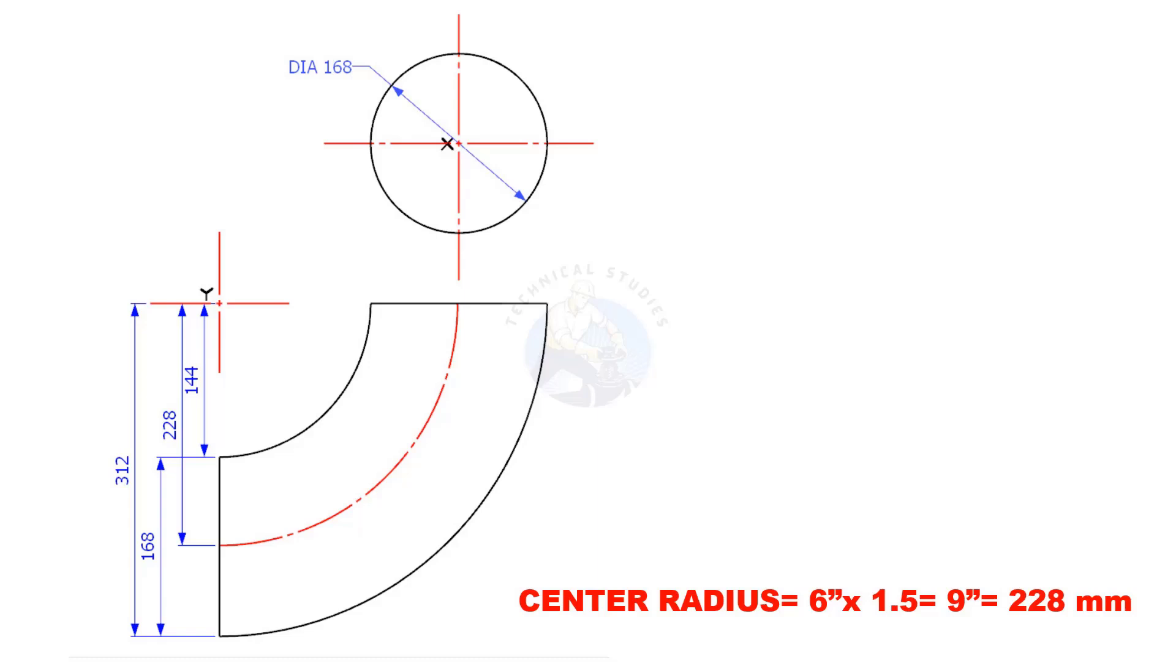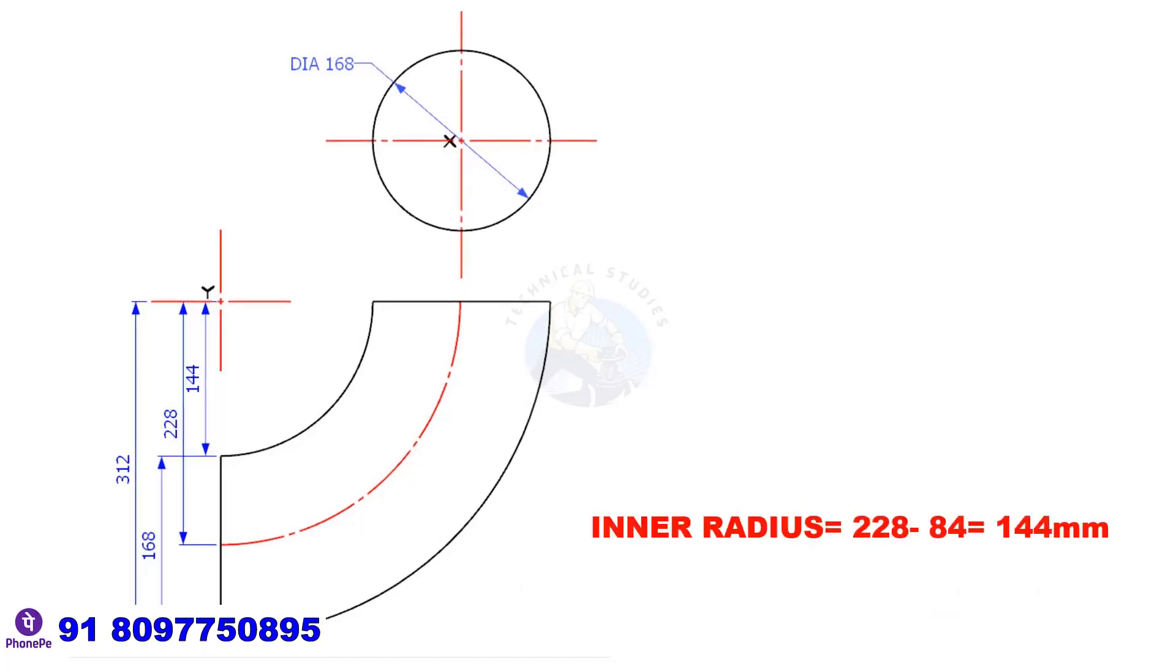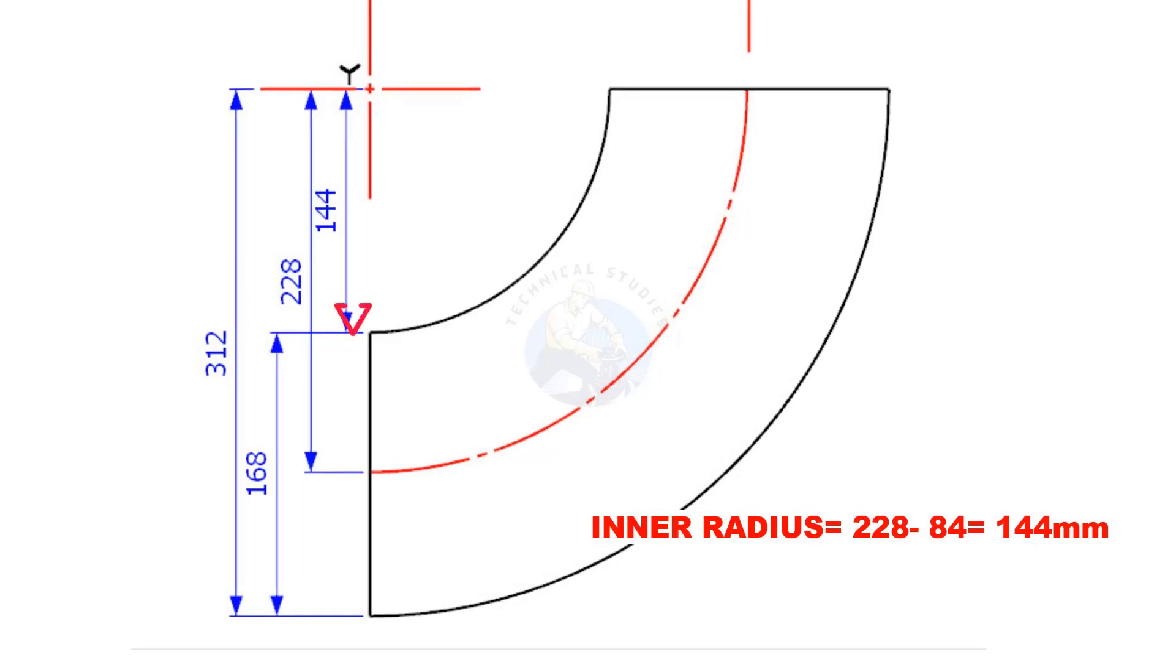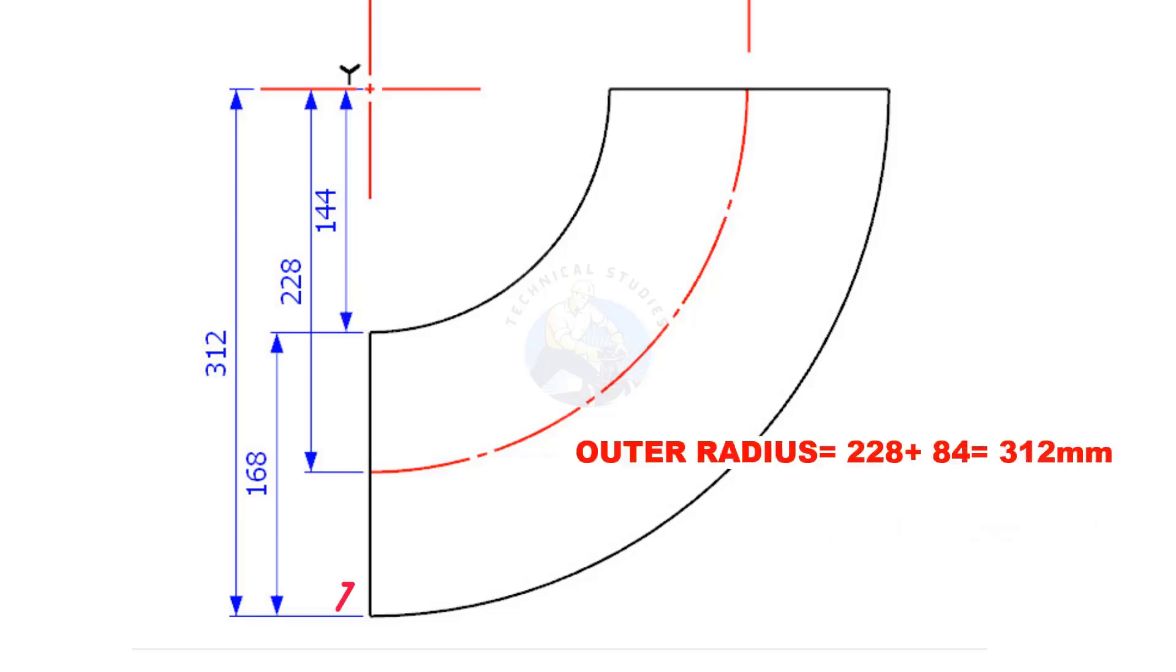Convert 9 inches to millimetres. So the elbow centre is roughly 228 millimetres. To find the inner radius, subtract half of the diameter of the pipe, that is 84 millimetres, from the centre radius. Outer radius is 228 plus 84 equals 312 millimetres.